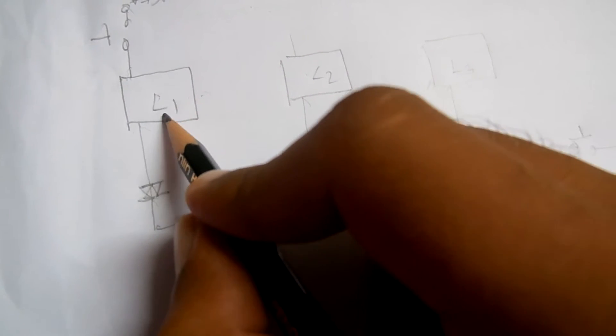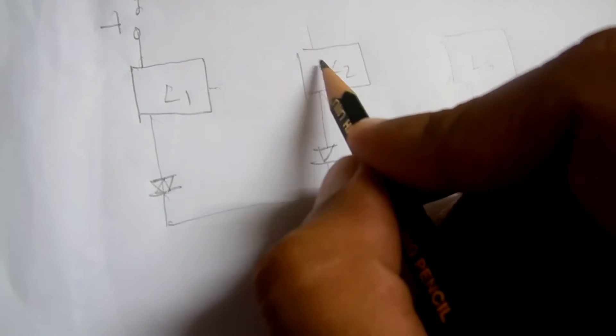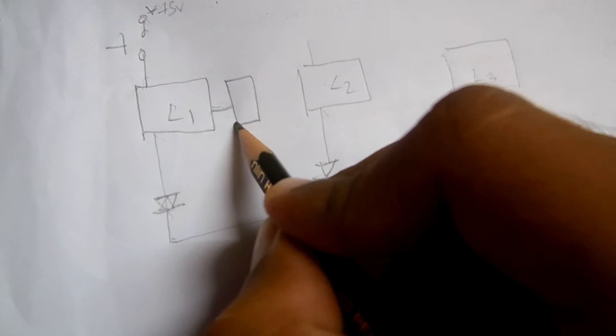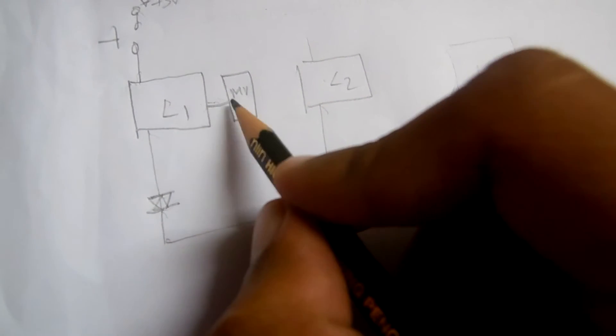So if this one turns off after some time—after a few milliseconds—it should pass the data to here. So what we have done is we have here one monostable multivibrator. As soon as it turns off, after some time it turns on.